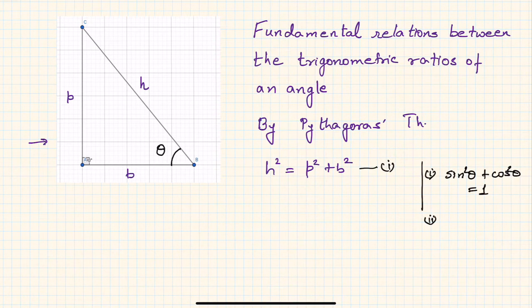Secondly, we learned that cosecant squared theta is equal to one plus cotangent squared theta. These are the two relations we have learned. Now we are going to deal with the third one.